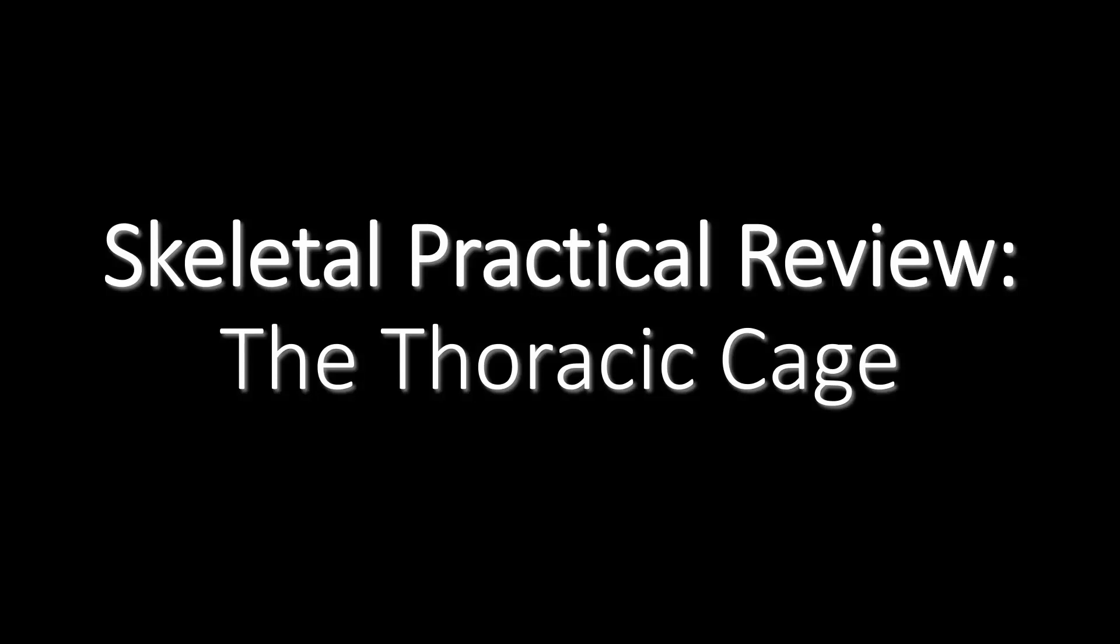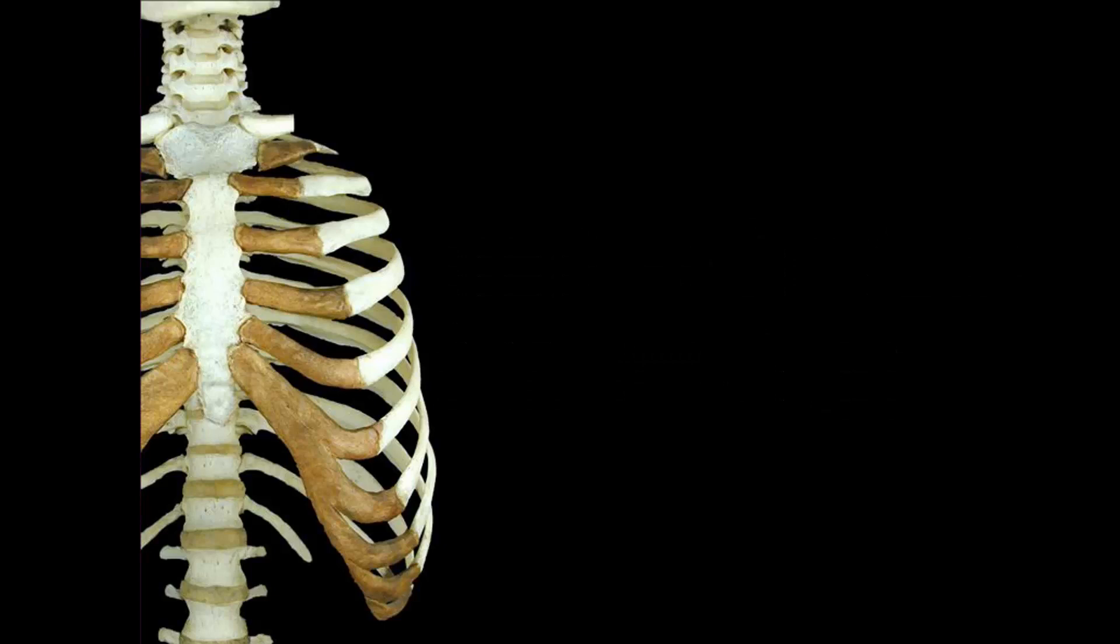In this skeletal practical review, we'll look at the thoracic cage. Now the thoracic cage, also known as the rib cage, consists of 12 pairs of ribs.